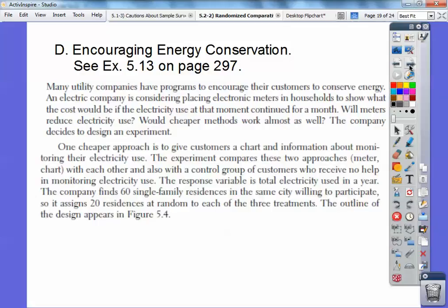Here's what they did. One cheaper approach is to give customers a chart and information about the monitoring of their electrical use. The experiment compares these two approaches, either the meter or the chart, with the other and also with a control group of customers who receive no help in monitoring their electricity at all. So the response variable is the total electricity used in a year. The company finds 60 single family residents in the same city willing to participate. So it assigns 20 residents at random to each of the three treatments. There's three treatments. One is meter, one is the chart, and one is no help at all.